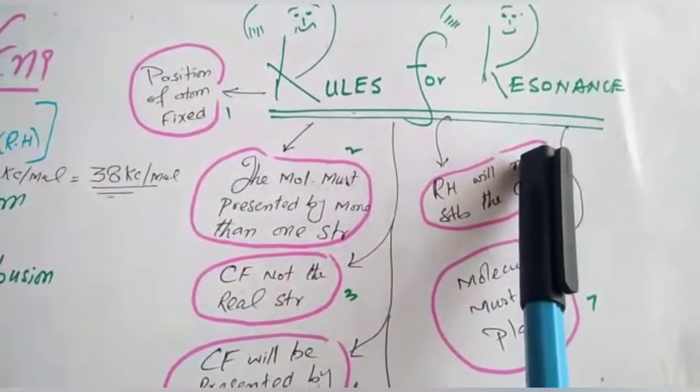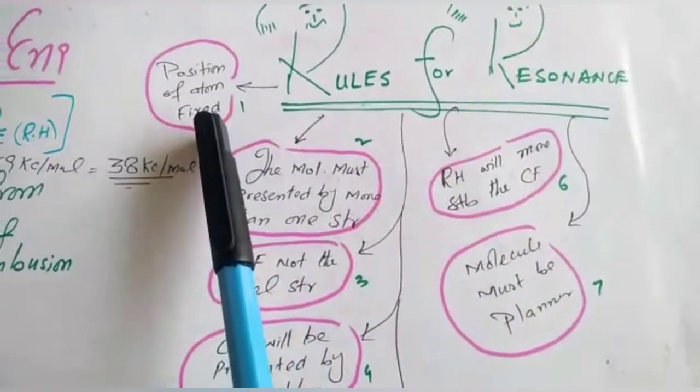Rules for Resonance. Number first, the position of atom must be fixed.